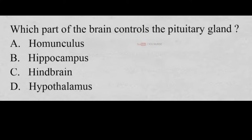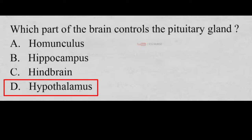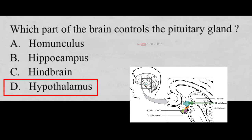Which part of the brain controls the pituitary gland? A. Homunculus, B. Hippocampus, C. Hindbrain, D. Hypothalamus. And the correct answer is D, Hypothalamus. The hypothalamus is the part of the brain that controls the pituitary gland.